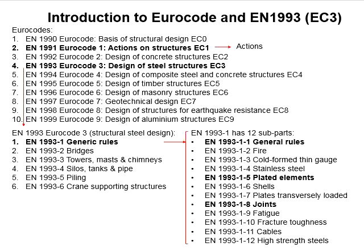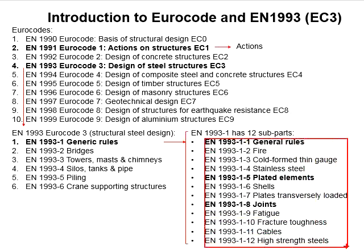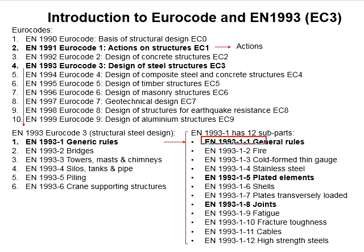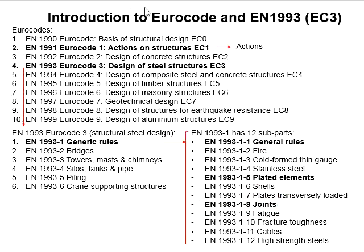Within Eurocode 3 Part 1, there are 12 sub-parts covering different scopes of the design. In this chapter, we are going to focus more on the general rules, plate elements, and joints. The general rules are normally used for the design of beams and columns. For joints and connections, we refer to Part 8, and for plate girder design we refer to Part 5.